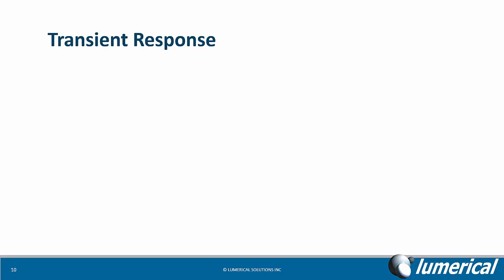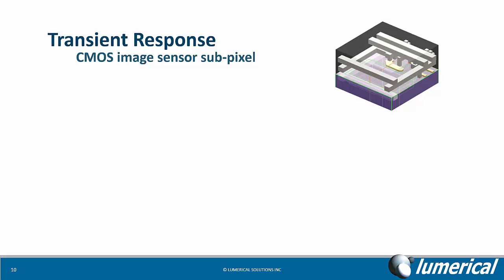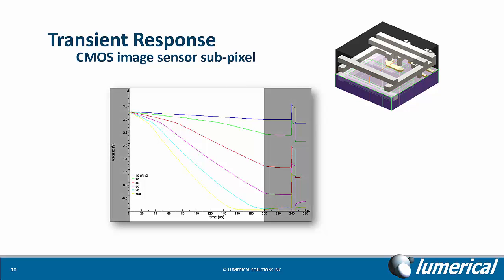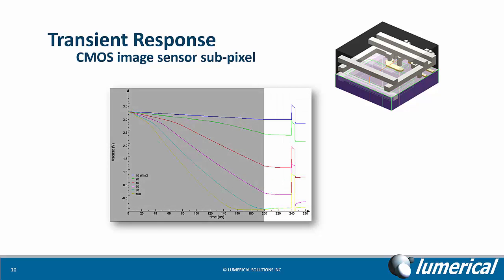The charge transport solver can also perform transient analysis over a wide range of time scales, using an efficient and adaptive time-stepping algorithm. Here we illustrate the time-varying response of a CMOS image sensor subpixel illuminated by an optical input of different intensity, applied over a specified time window. The generated charge is then integrated and transferred to the floating diffusion during readout.